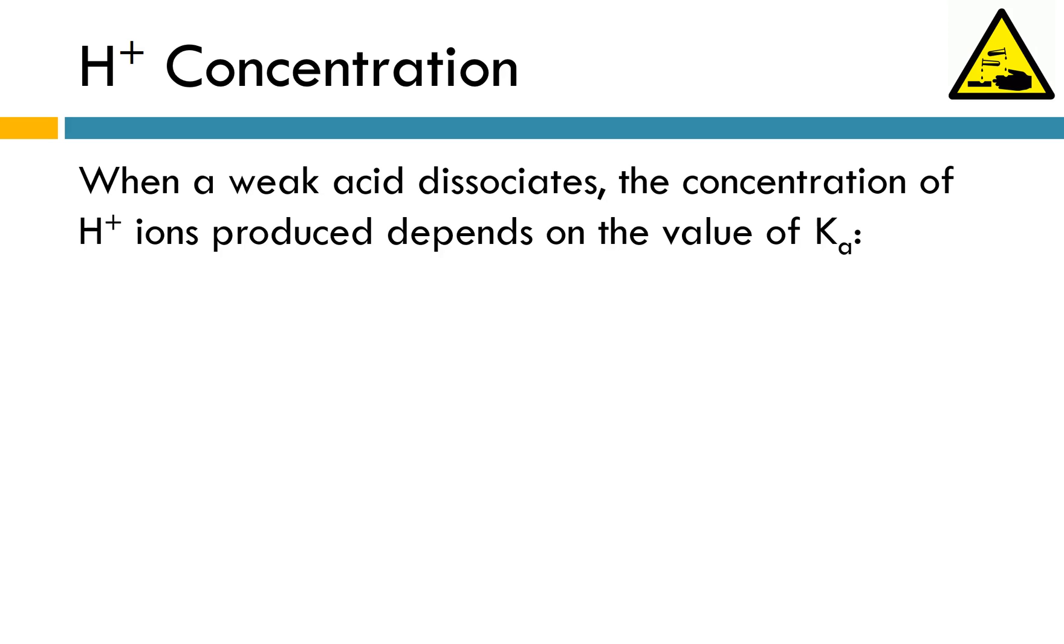When a weak acid dissociates, we have to calculate something called Ka. Ka is the equilibrium constant for an acid. And you might cringe a little when you hear equilibrium constant. I know that that can be a difficult topic for people. But we're going to revisit it and hopefully now that we're doing it again, it's going to be a little bit easier. When we have a weak acid dissociating, it doesn't dissociate 100%. The concentration of hydrogen ions produced depends on the value of Ka. This is just the equilibrium constant for an acid. And you can kind of think about this as a way to gauge how far does the forward reaction take place.